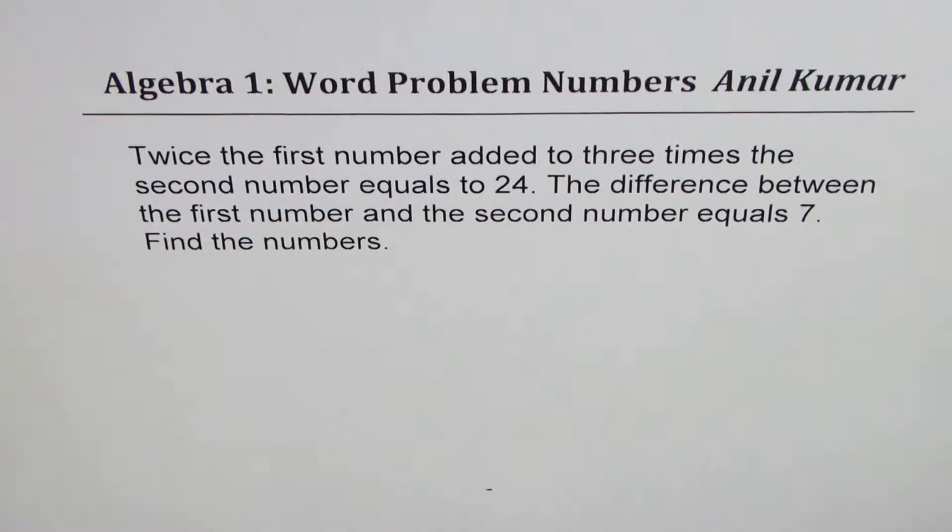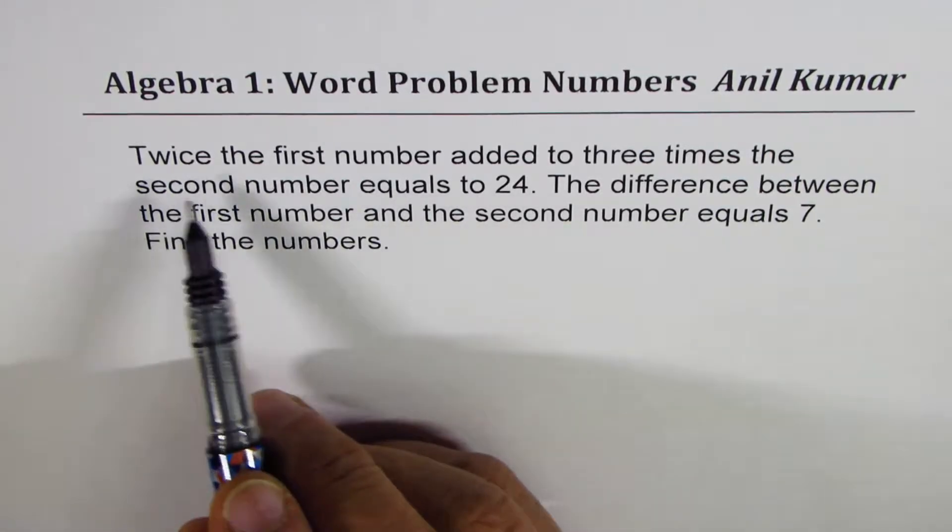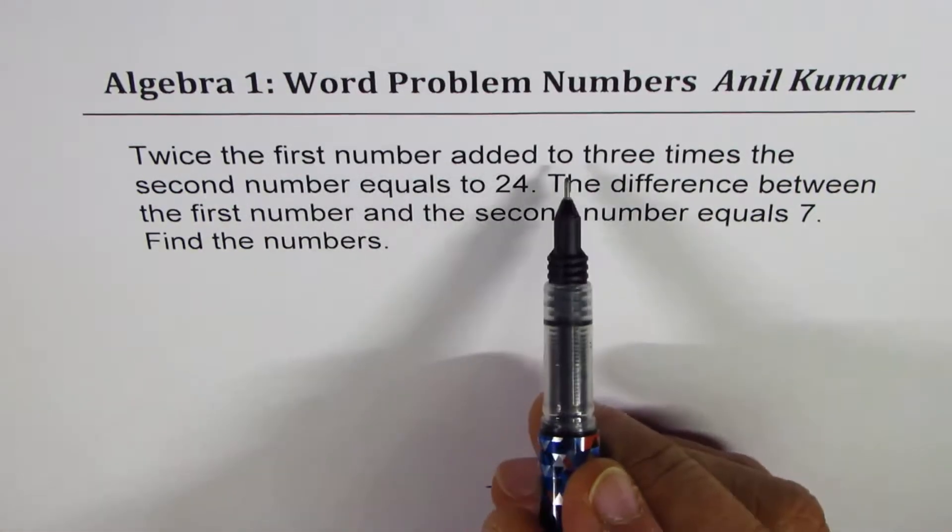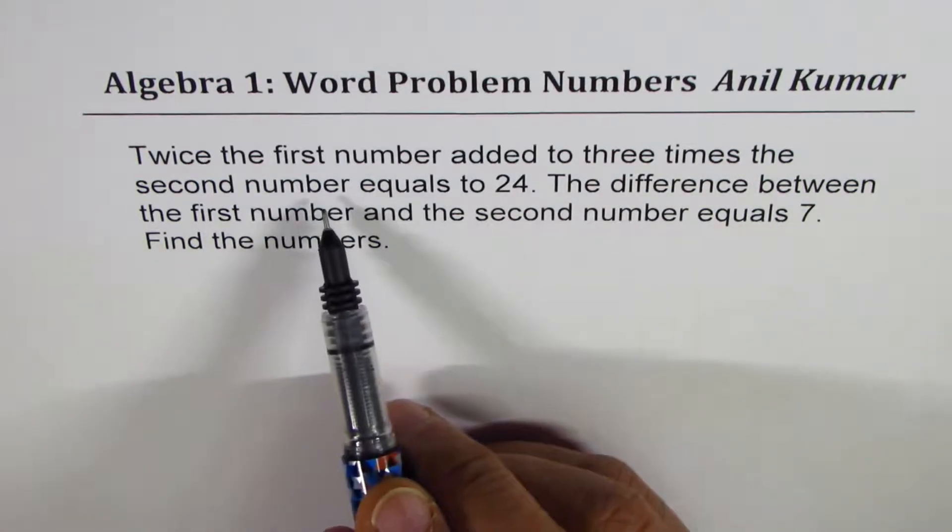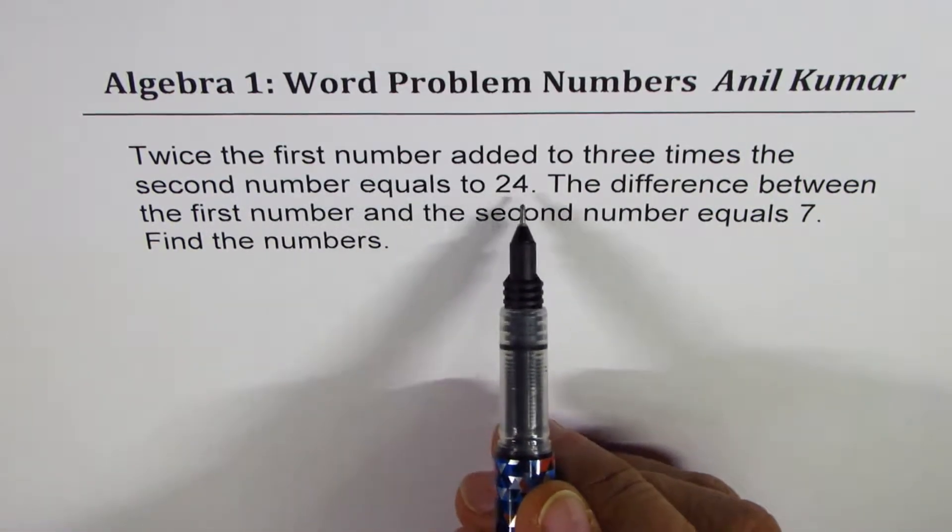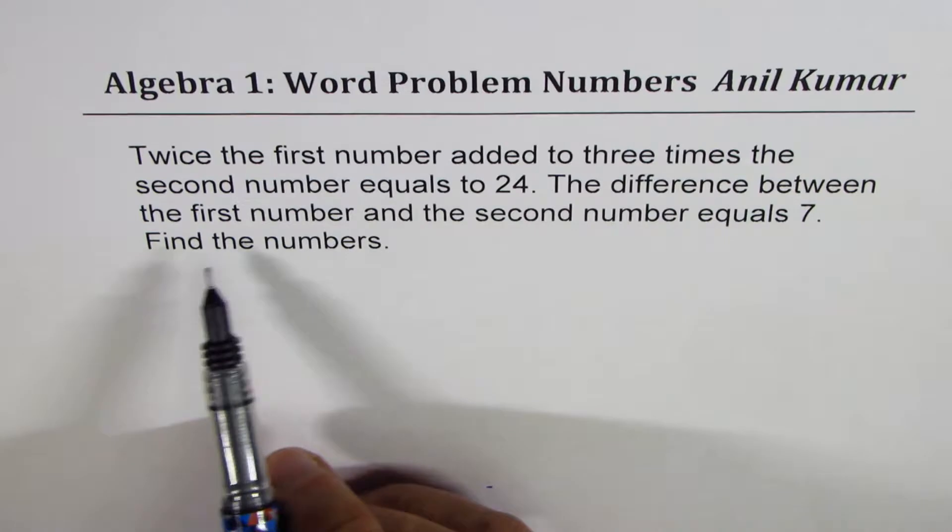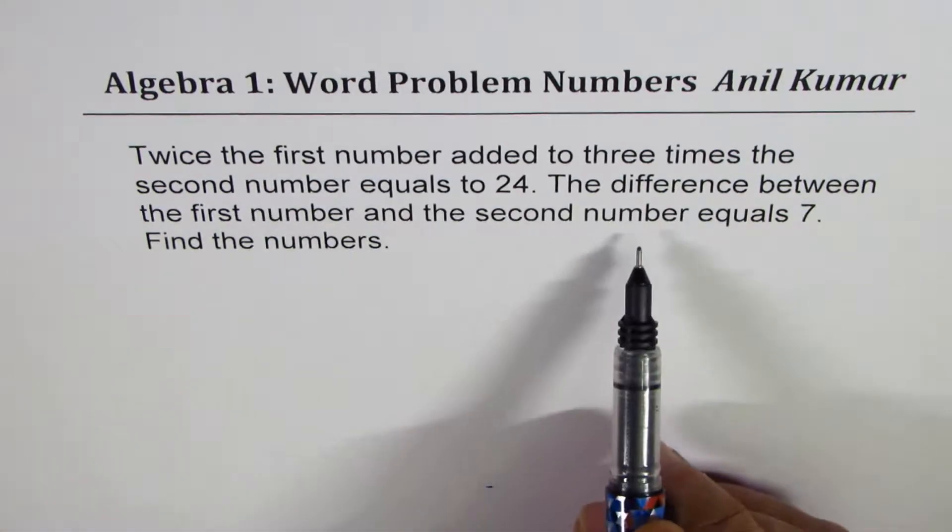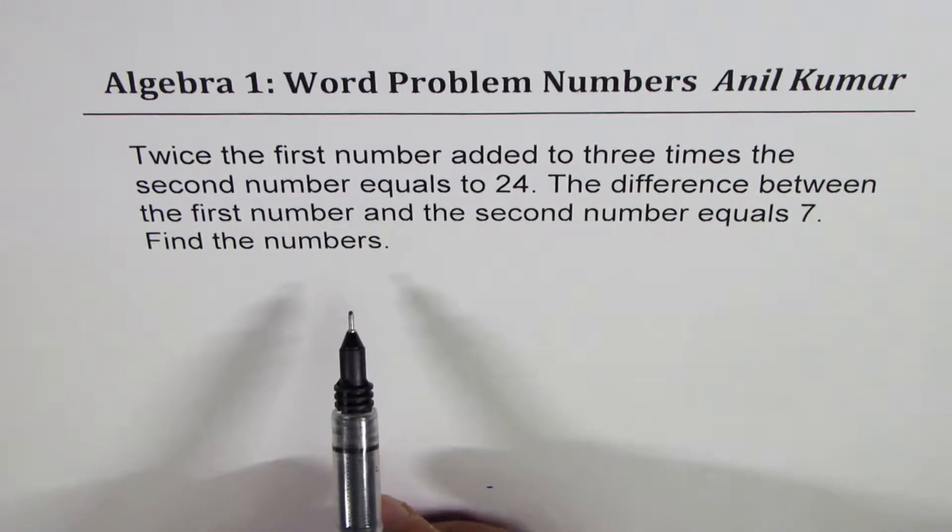I'm Anil Kumar sharing with you a word problem. This one is based on numbers. Twice the first number added to three times the second number equals 24. The difference between the first number and the second number equals seven. Find the numbers.